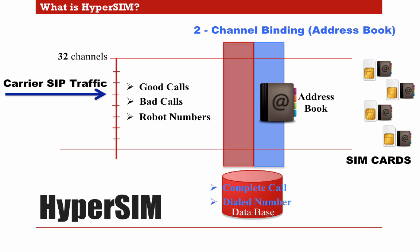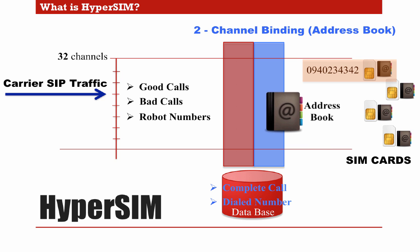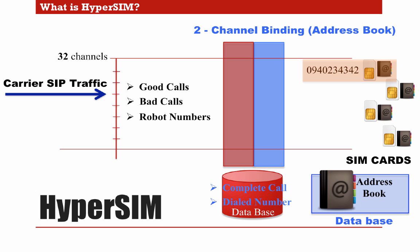Creating an address book for each GSM module means that whenever a call is completed or even just dialed for the first time on a GSM module, it will be bound to that module. So whenever this number is dialed, the Hypermedia Gateway will attempt to always use the same module for it. All address book binding information will be stored in an address book database, letting you search any bound number either to a specific GSM module or a specific SIM card. HyperSIM database can show from which VoIP channel a specific number comes in and from which module and SIM card it goes out. As an optional configuration, channel binding will also allow you to bind more than one module to the same address book.